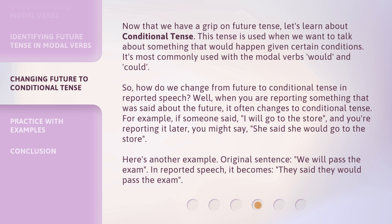So, how do we change from future to conditional tense in reported speech? Well, when you are reporting something that was said about the future, it often changes to conditional tense. For example, if someone said, "I will go to the store," and you're reporting it later, you might say, "She said she would go to the store." Here's another example. Original sentence: "We will pass the exam." In reported speech, it becomes: "They said they would pass the exam."